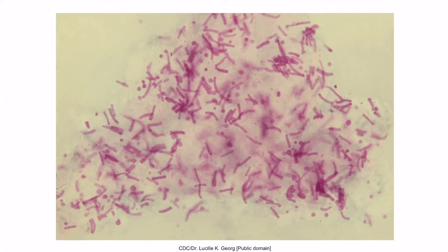This is a microscopic image of Malassezia furfur. In this image, we can see short hyphae that appear like noodles. We can also see little circular yeast cells that look like meatballs. The combination of yeast and hyphae is often described as a spaghetti and meatballs appearance.